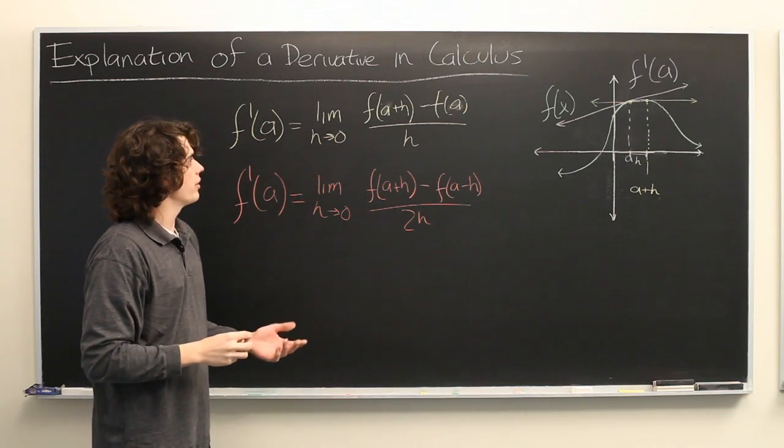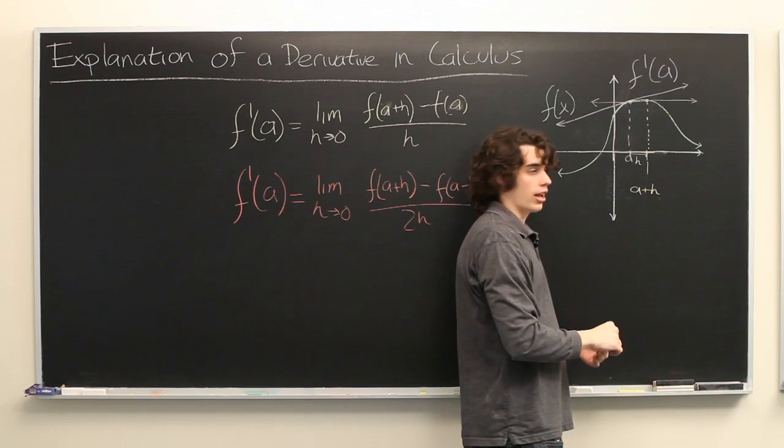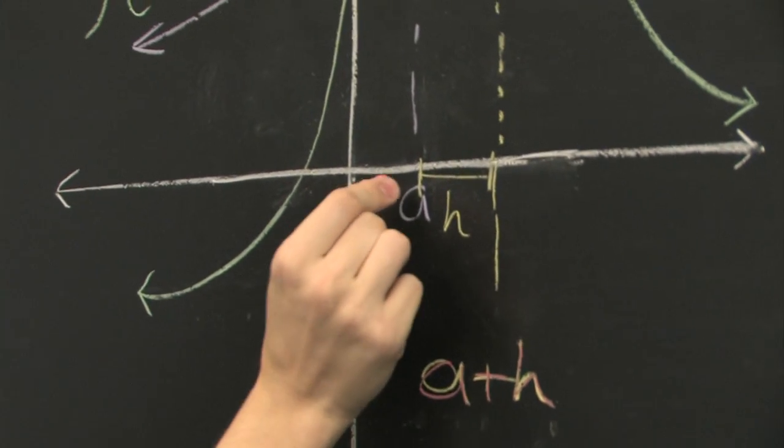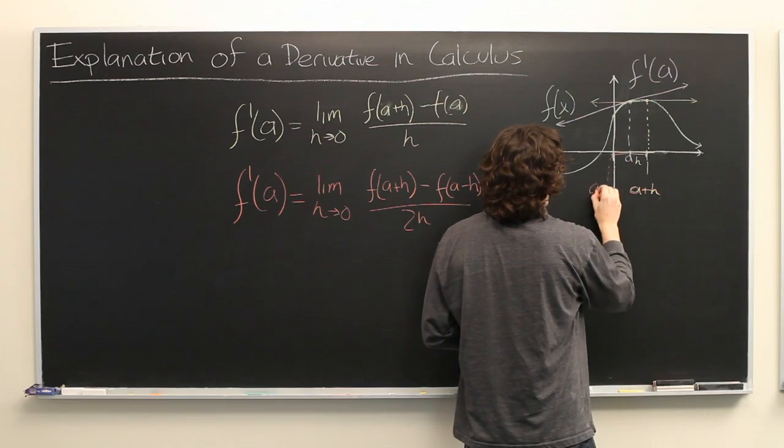Well, what does this symbolize? Well, here we have a plus h again, from the previous limit. But now, let's go in the opposite direction. Here, we have a minus h.